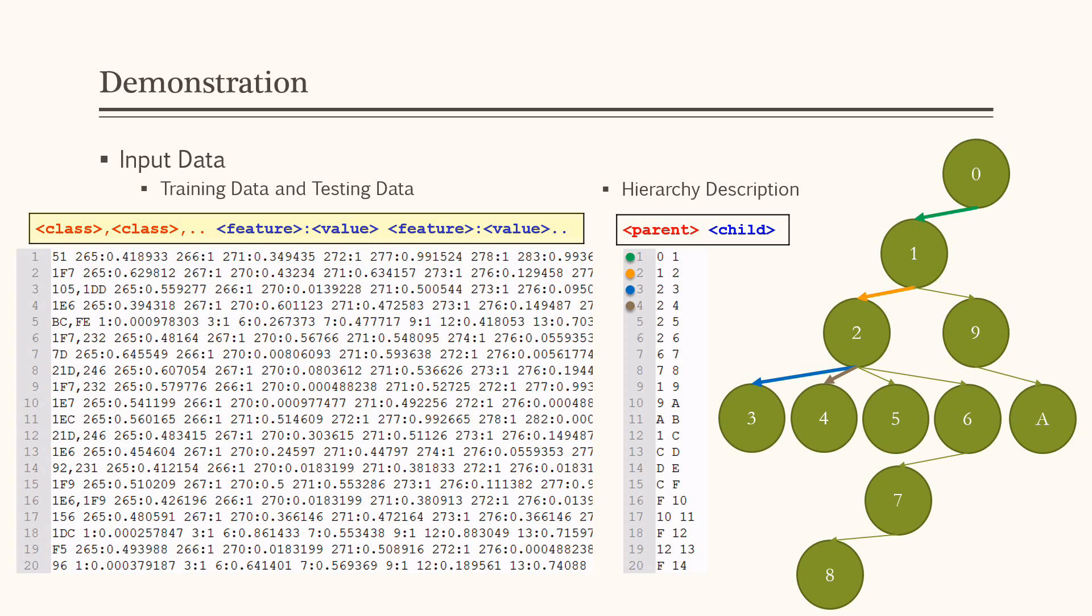In hierarchical multi-label classification, two inputs are needed. Training and testing data are in the same format. Each line represents an instance starting with true classes and followed by feature values. Hierarchy description defines class organization. Each line represents superclass-subclass relationship. For example, 0,1 means class 0 is a subclass of class 1.